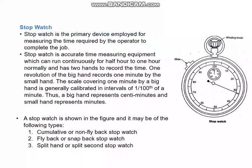Let us first look at the stopwatch. You may have seen one — it was commonly used some years back, but nowadays mobile phones have replaced most gadgets. However, for carrying out time study, the stopwatch is still essential. It is the primary device used for measuring the time required by the operator to complete a given job. It is an accurate time-measuring equipment.